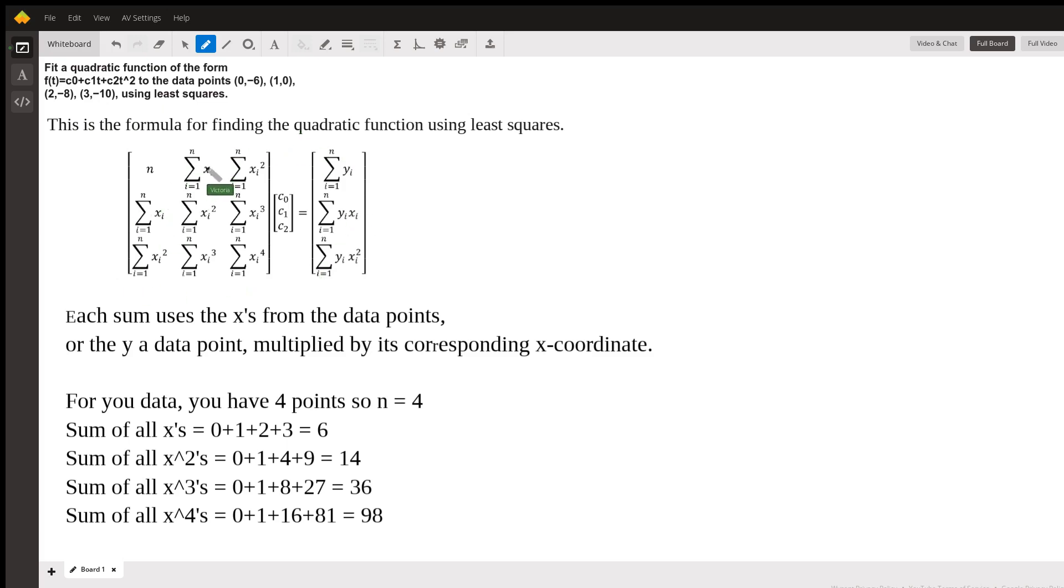This first one is the sum of all the x values. So first of all, we have four data points, and so n is going to become 4. That's what goes here. Then if we add up all the x's, 0 plus 1 plus 2 plus 3, that makes this 6. And this is the same thing, so this is 6.